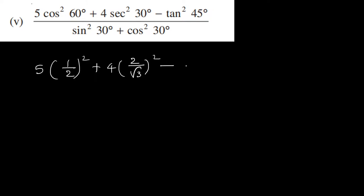Minus tan square 45. Tan 45 is 1 and 1 square is 1. By sin square 30 is 1 by 2 whole square. Sin 30 value is 1 by 2. Square plus cos 30 is root 3 by 2 whole square.